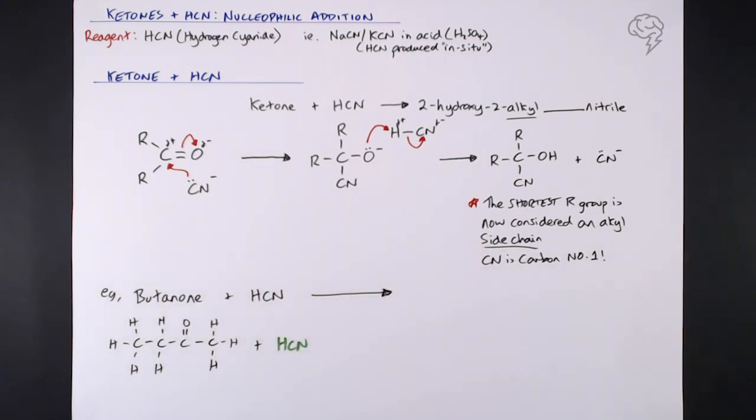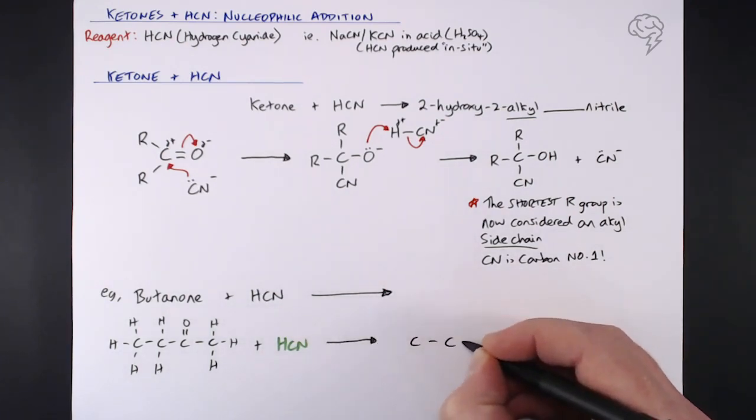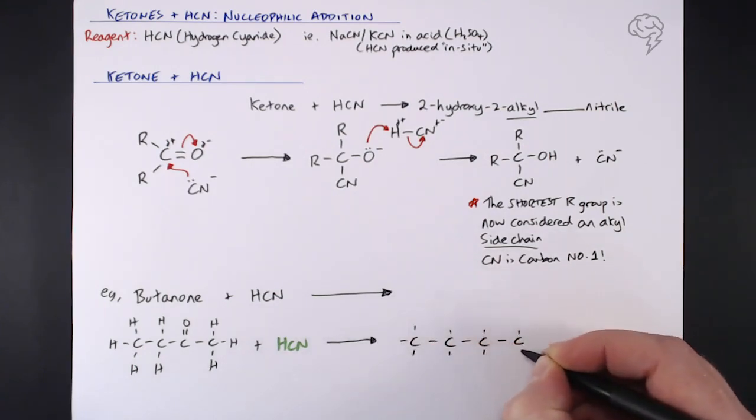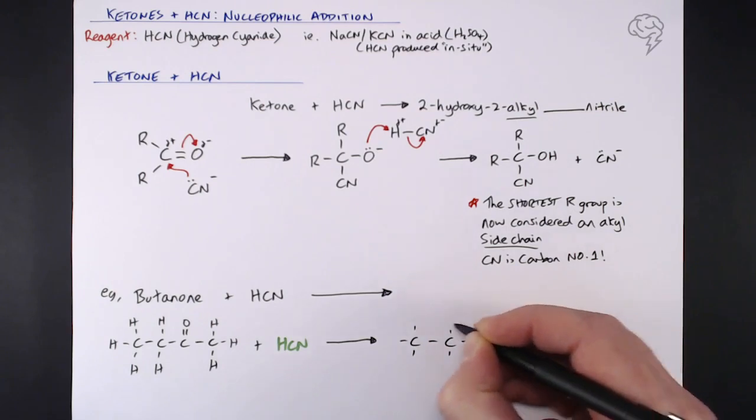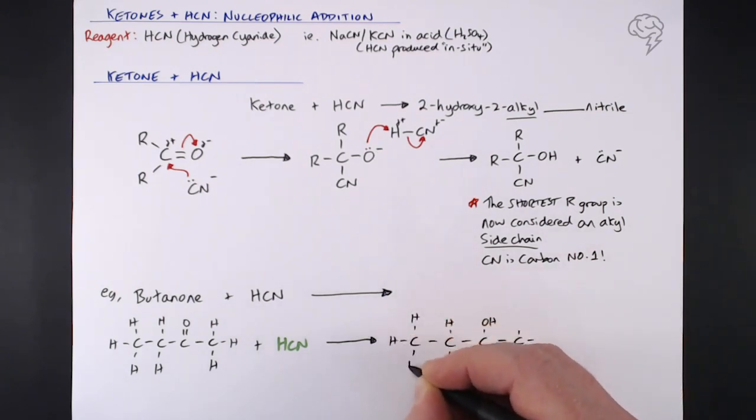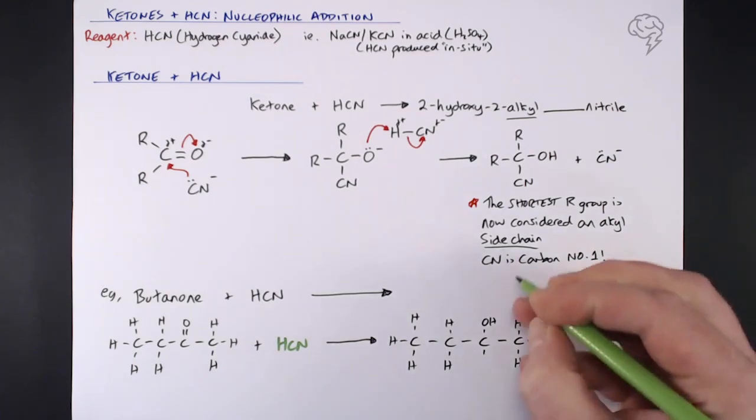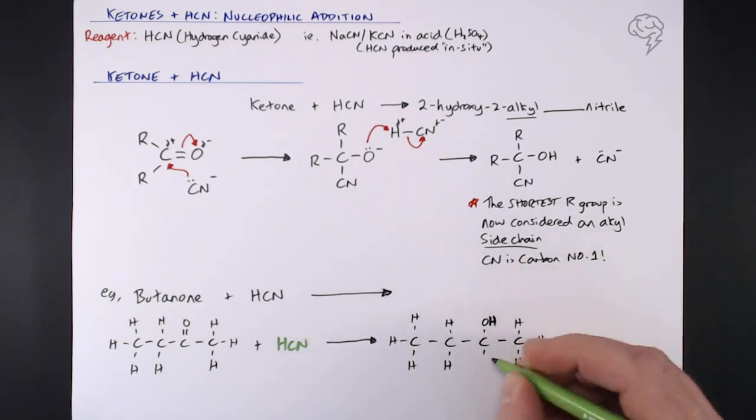By adding HCN we now have a redirection in that main carbon chain. Everything in black on the right is part of the original butanone molecule, everything in green is where our atoms come from in the HCN. We end up with this new molecule with a new numbering system.